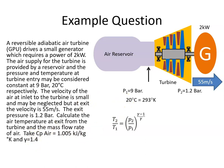So we are given the pressure at the inlet as 9 bar and we are told that's 20 degrees Celsius, so that equates to 293 degrees Kelvin. And we are told that the pressure at the outlet is 1.2 bar, so P2 is 1.2 bar. And we are told that the power of the generator is 2 kilowatts, so the turbine is producing 2 kilowatts of work to drive the generator. And we are told that the velocity of the air at the exit is 55 meters per second.